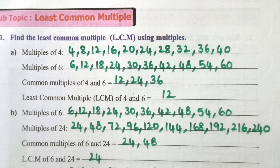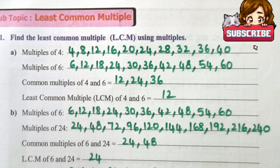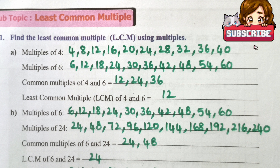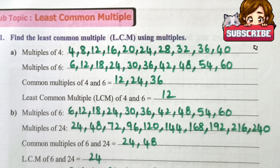Worksheet 10: Find the least common multiple using multiples. Multiples of 4: 4, 8, 12, 16, 20, 24, 28, 32, 36, 40.